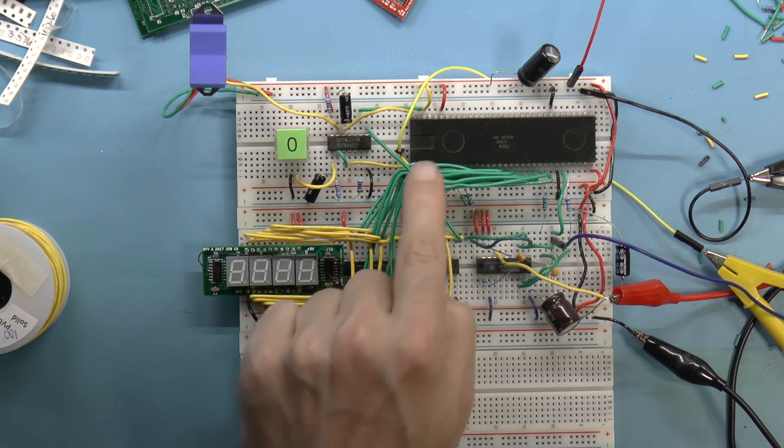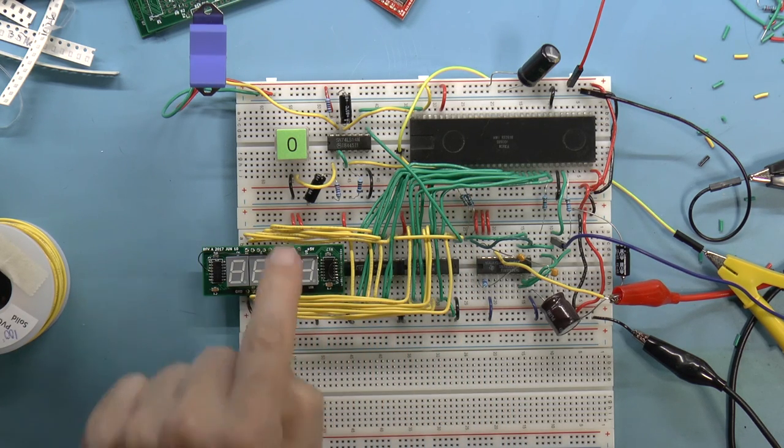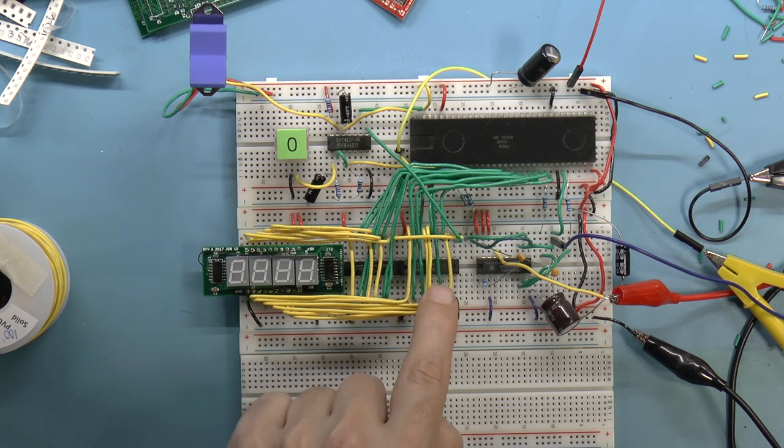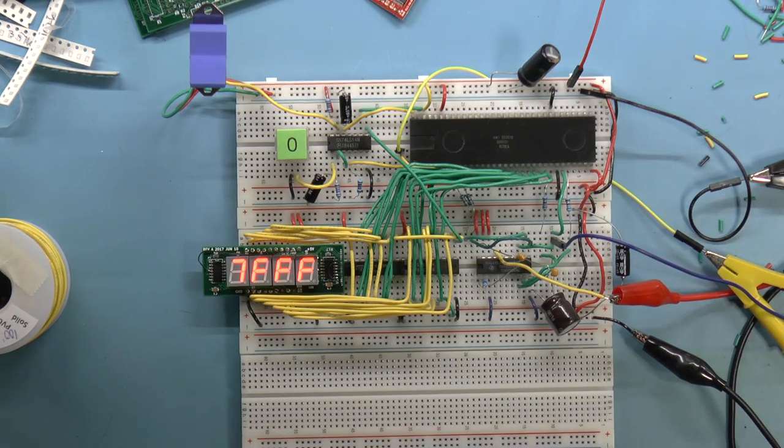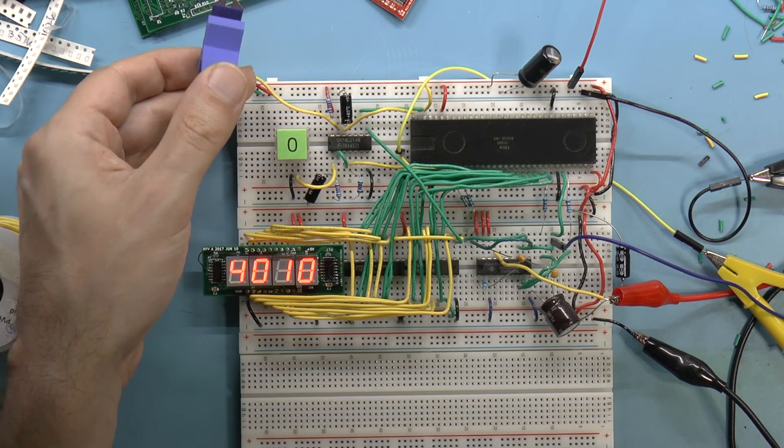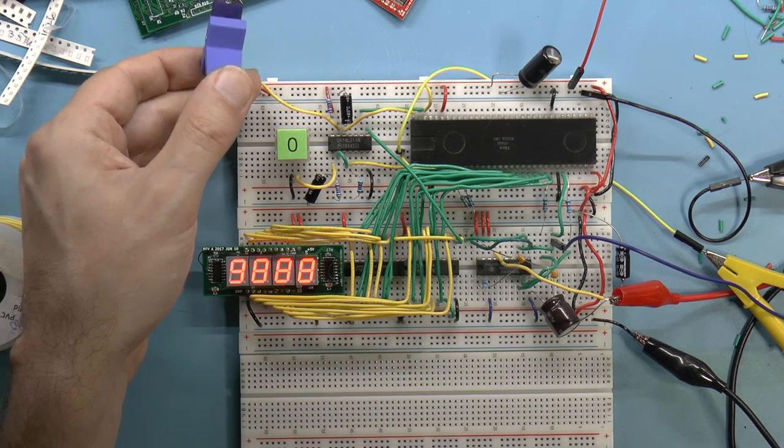Alright, so here I've added the latches and a switch for the hold signal. Turning on the power with the processor held seems to put the address lines at 7FFF. Actually, it's FFFE, since I forgot to shift the address lines one.